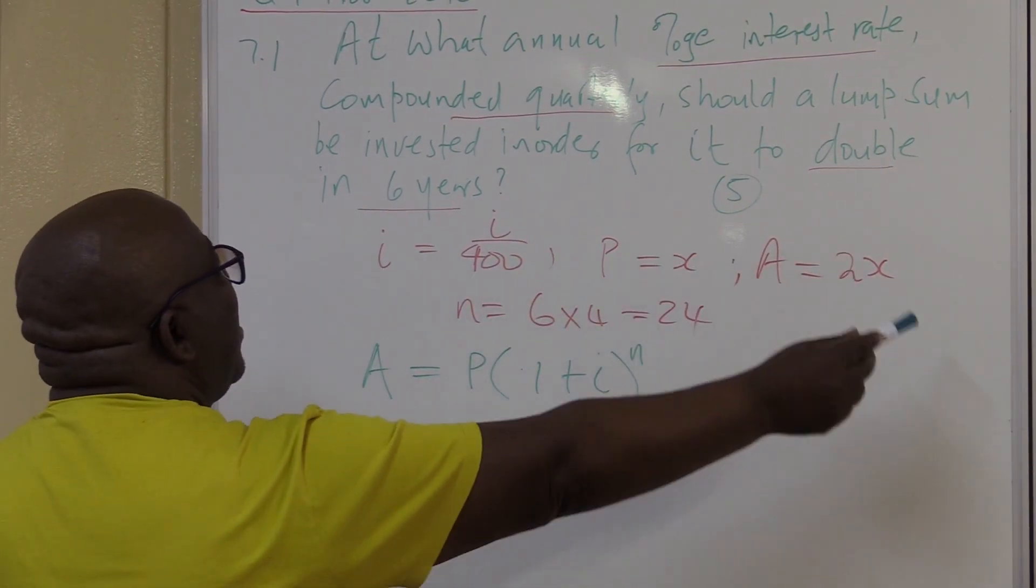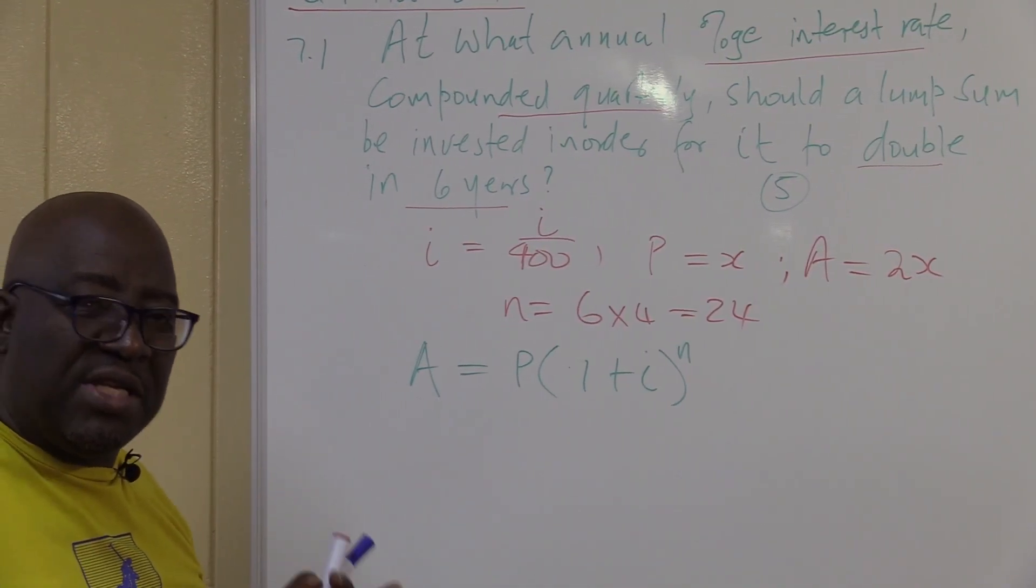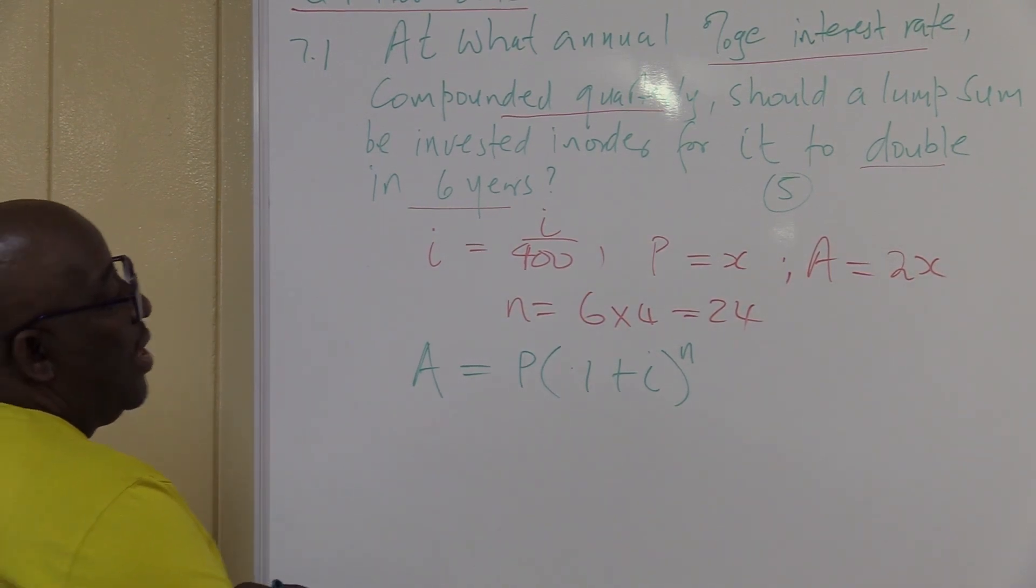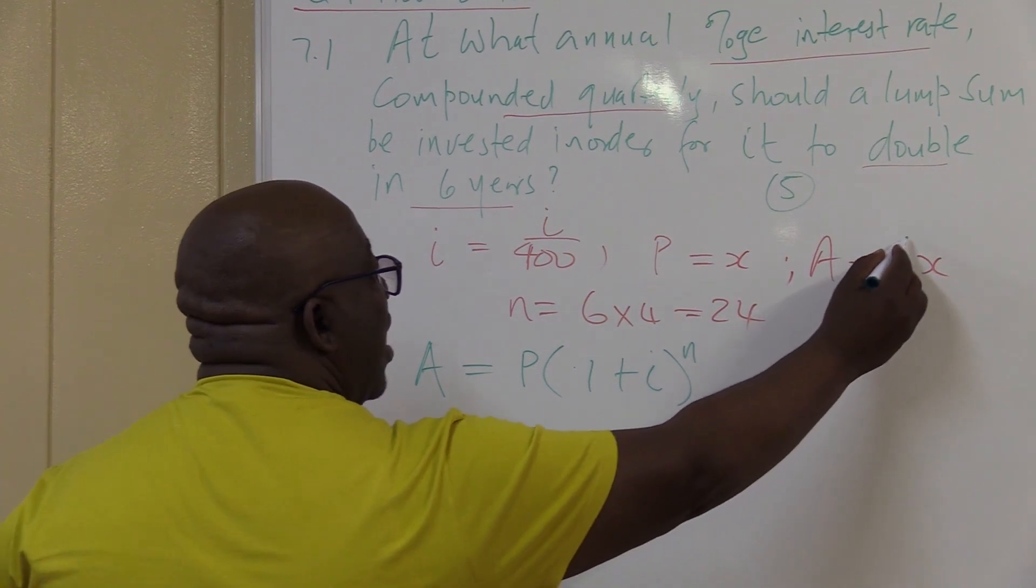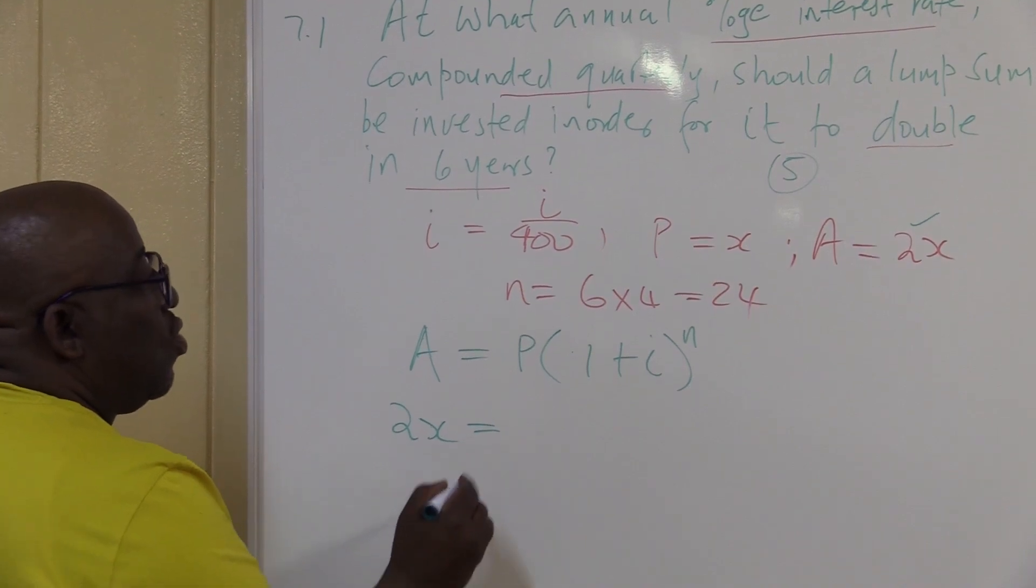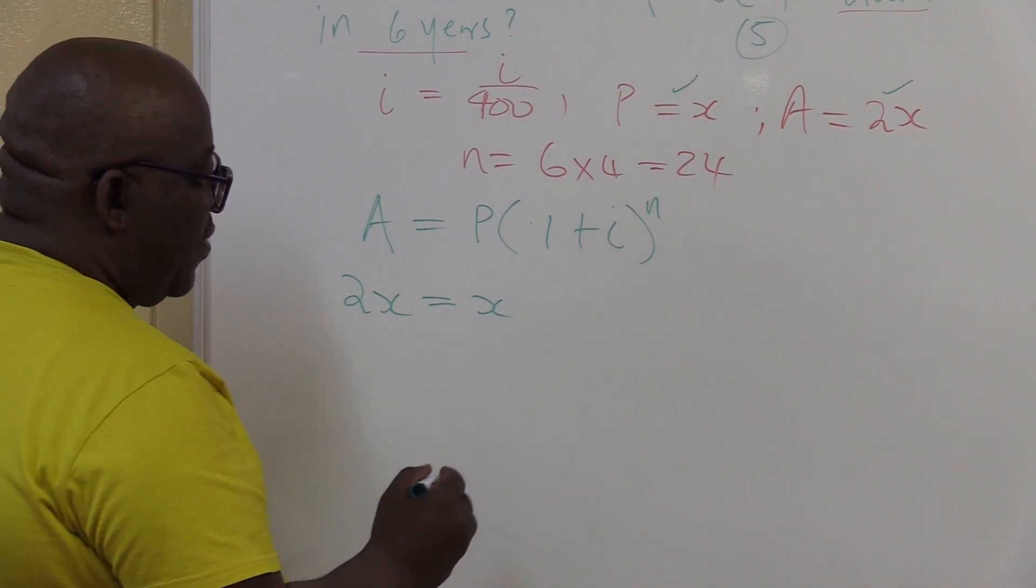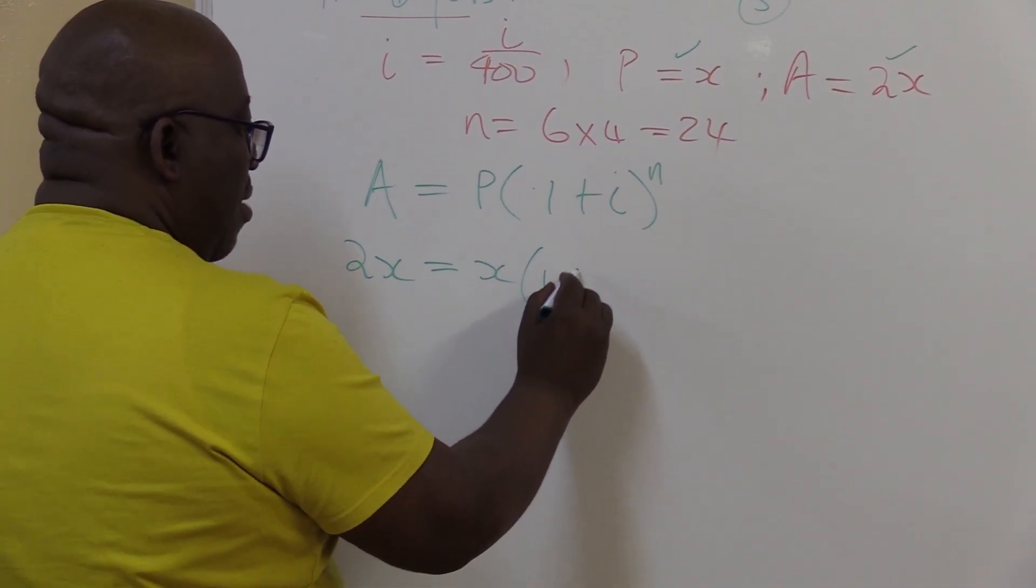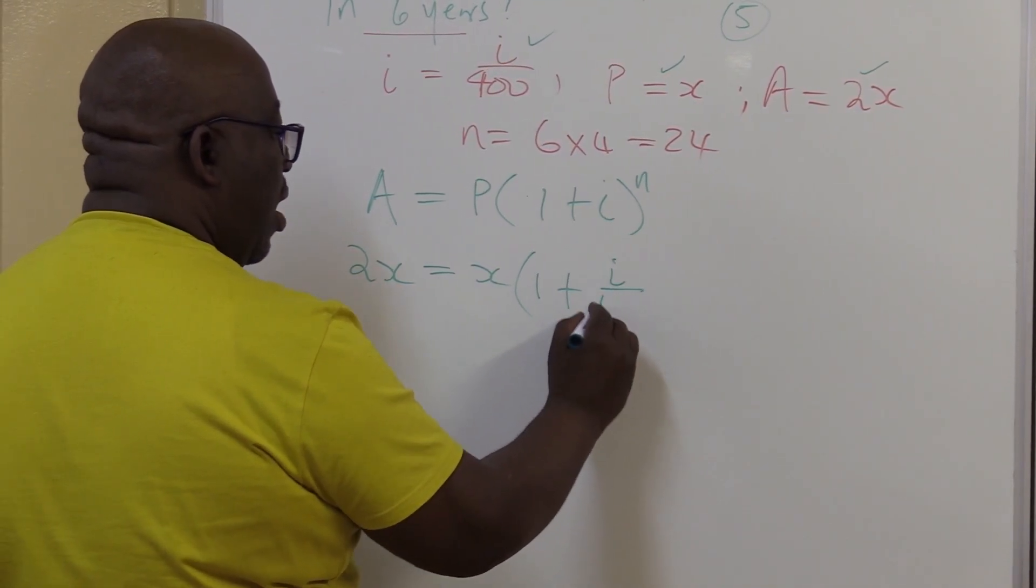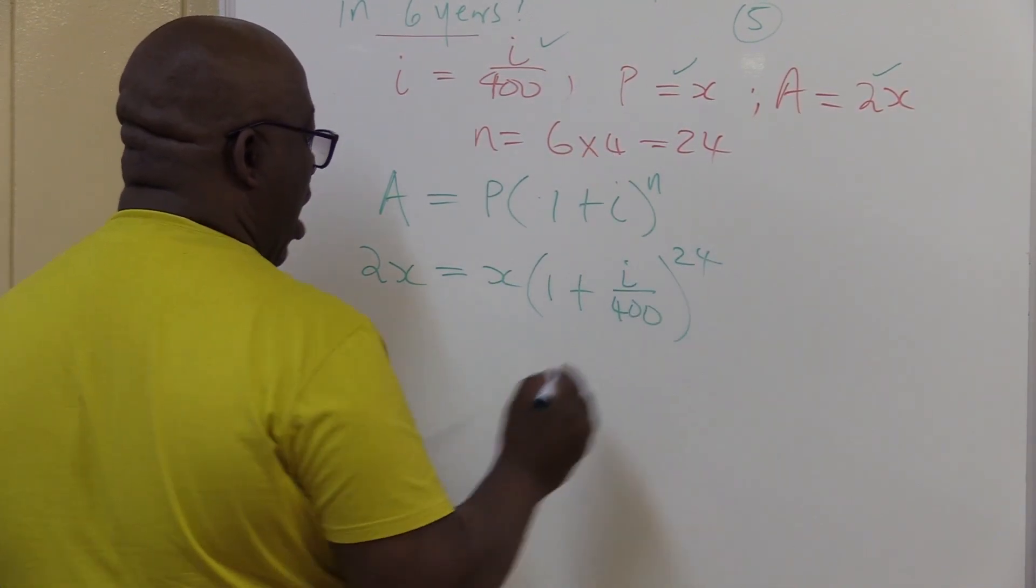The key in mastering this section: make sure that you collect your data. It makes life easier. What is A? A in this particular case is 2x. Equals what is P? P in this case is x. Plus what is i? My i is i over 400, raised to the power n. What is n? 6 times 4, it is 24.